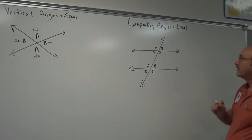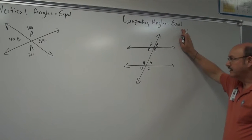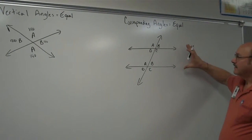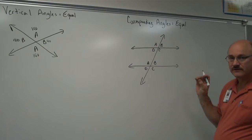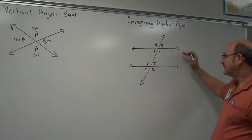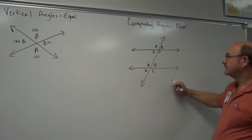Corresponding angles. Corresponding angles are also equal. Corresponding angles are angles that lie in the same location on different lines. We have two lines here with a transversal coming through the middle.